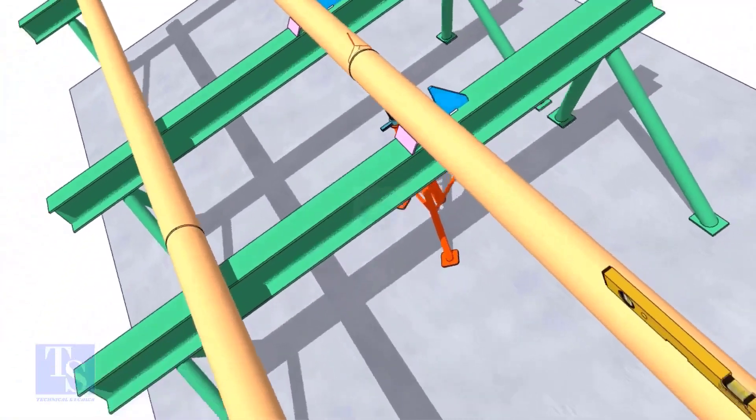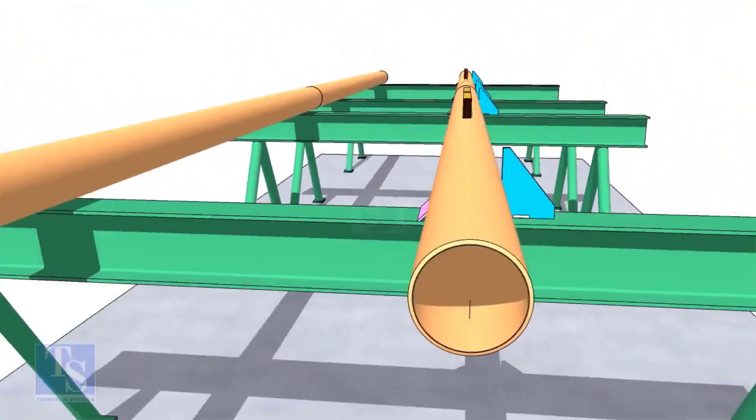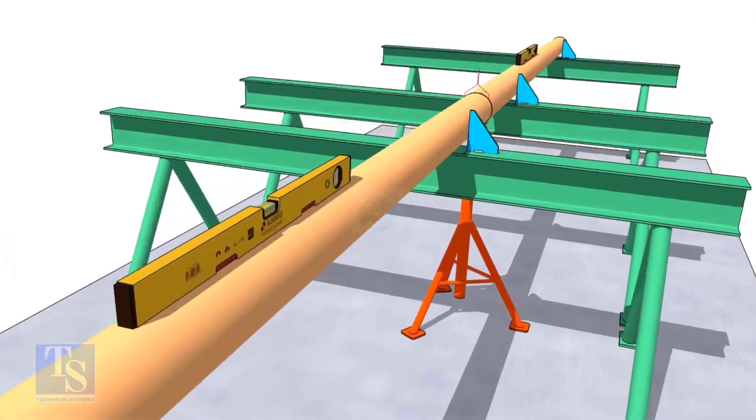Check the straightness of the pipes by looking from one end of the pipes. This is the best way to check the straightness.